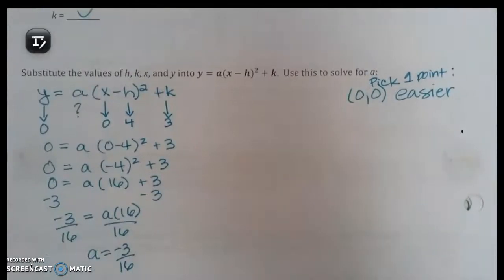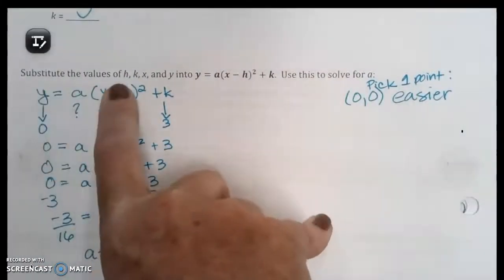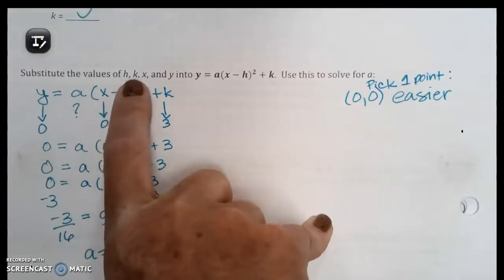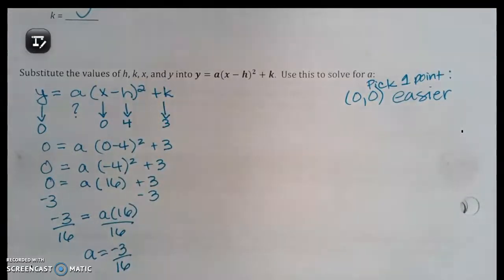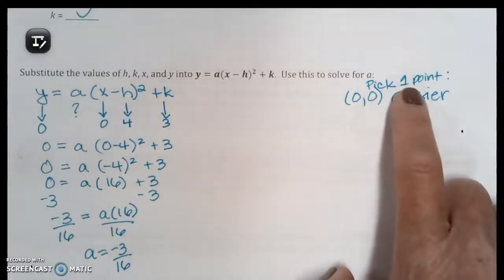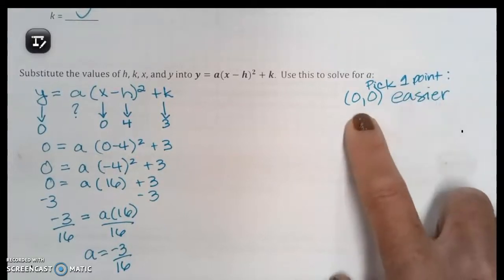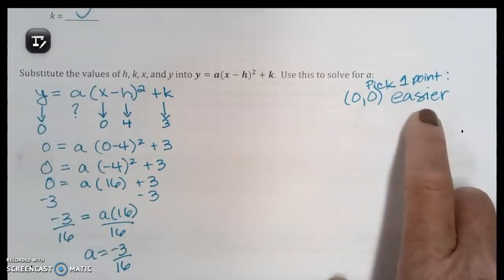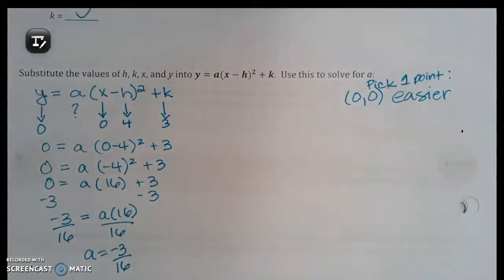Here's what you're going to do. You're going to substitute the values for h and k, which is your vertex, and x and y, just one of your x and y's. So you're only going to pick one of the two points. I picked (0,0). Why? Because it's easier. But you can pick either one. So you would pick either (0,0) or (8,0). If you did your shifted, you would pick either (-4,0) or (4,0) depending on which one you did.